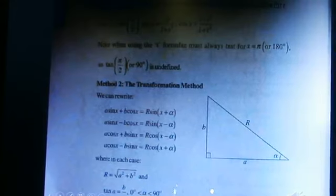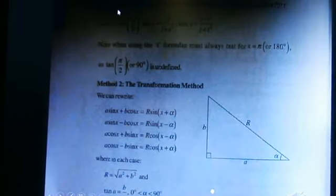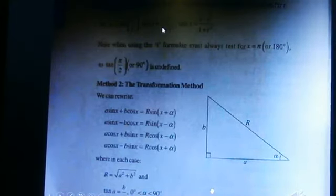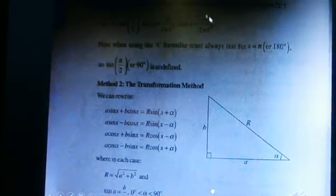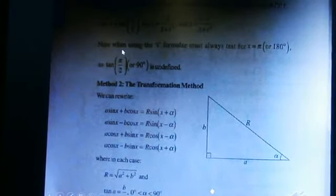So there is a given: if t is equal to tangent of theta by 2, then sine theta is equal to 2t divided by 1 plus t squared, and cosine theta is equal to 1 minus t squared divided by 1 plus t squared. So the tangent of 90 degrees or theta minus 2 is undefined.